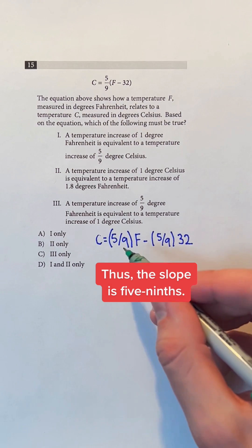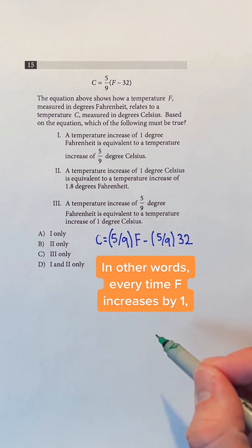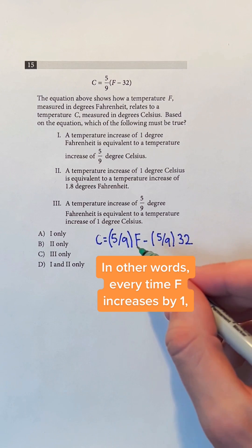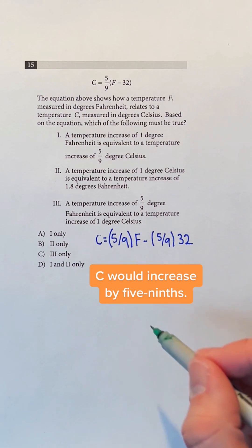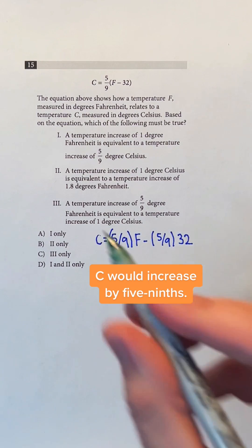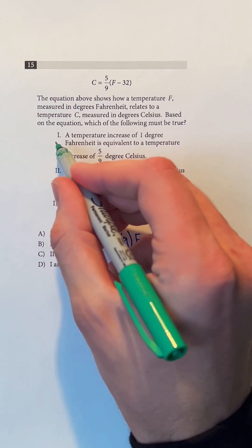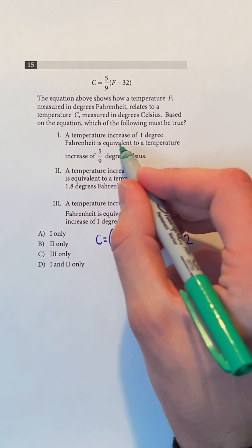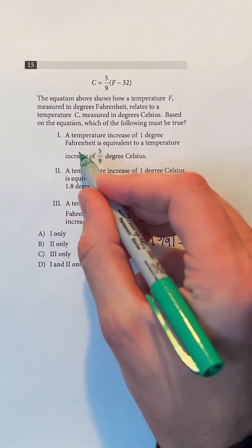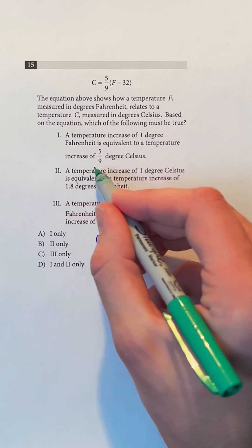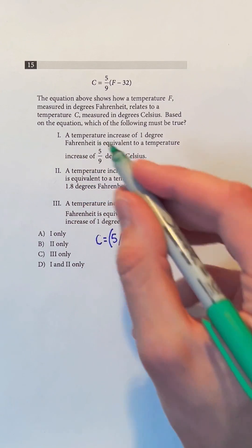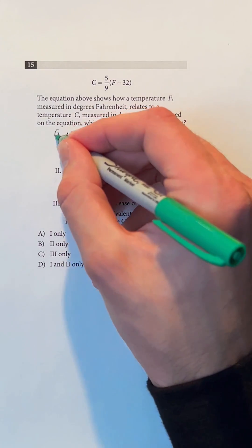Thus, the slope is 5/9. In other words, every time F increases by 1, C would increase by 5/9. Therefore, the first statement — a temperature increase of 1 degree Fahrenheit is equivalent to a temperature increase of 5/9 degrees Celsius — is true.